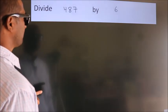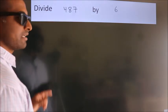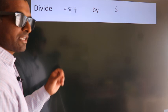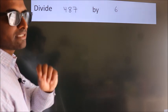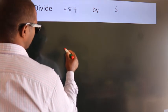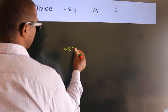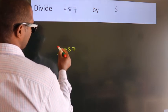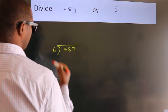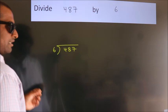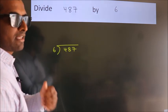Divide 487 by 6. To do this division, we should frame it in this way. 487 here, 6 here. This is your step 1. Next.